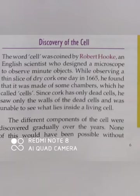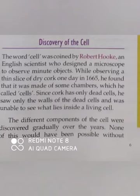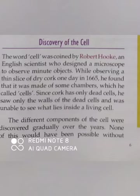How was the cell discovered? The word cell was coined by Robert Hooke, an English scientist. He designed a microscope to observe minute objects. While observing a thin slice of dry cork one day, he found that it was made up of some chambers which he called cells. Since cork has only dead cells, he saw only the walls of the dead cells.